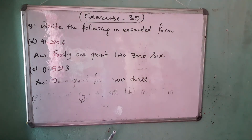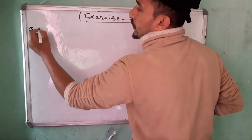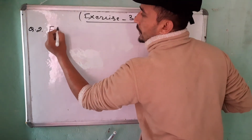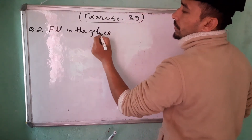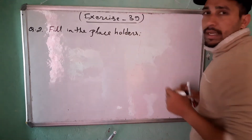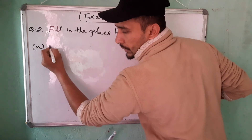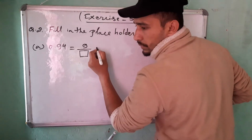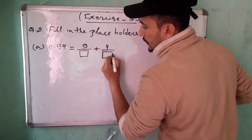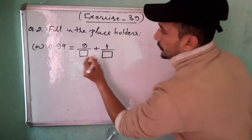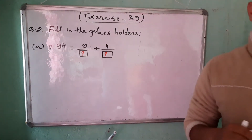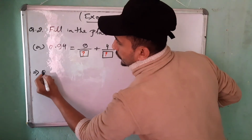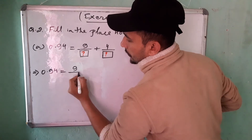Now let's move on to question number 2. Question number 2 is from your book. Fill in the placeholders — you have to fill up the gaps. Number A is: 0.94 equals 9 divided by (box) plus 4 divided by (box). You have to fill in these gaps. So 0.94 equals 9 upon (gap) plus 4 upon (gap).